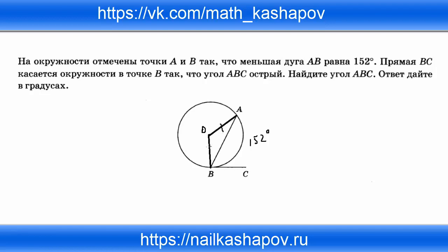OA равно OB, так как они равны как радиусы. Центральный угол AOB равен дуге, значит угол AOB равен 152 градуса. Треугольник AOB равнобедренный, поэтому угол OBA равен углу OAB.